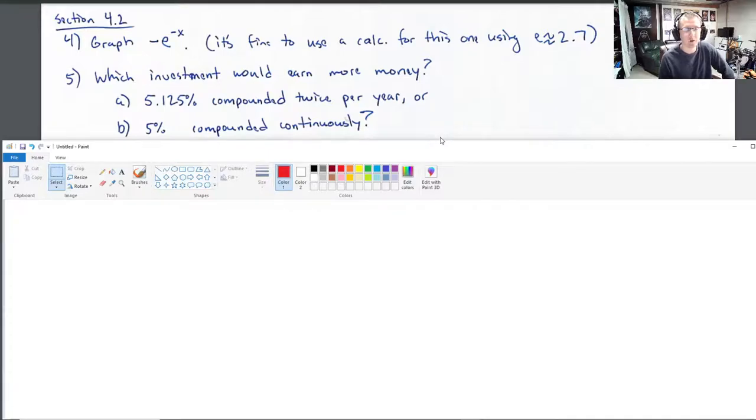5 and 1 8th percent compounded twice per year or 5 percent compounded continuously. So the continuous situation is this. We've got some principal amount. I don't know what it is. Times e to the rate, which is 0.05 times the time it's invested, t. I don't know the time. I don't know the principal amount. So that's what I've got. So this is the continuous setting.